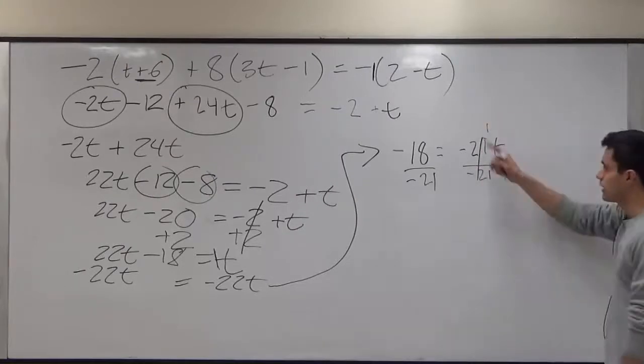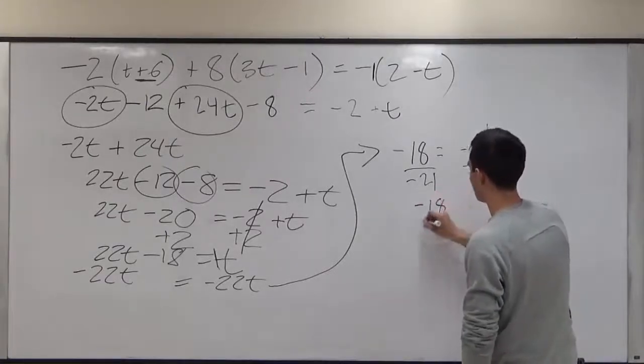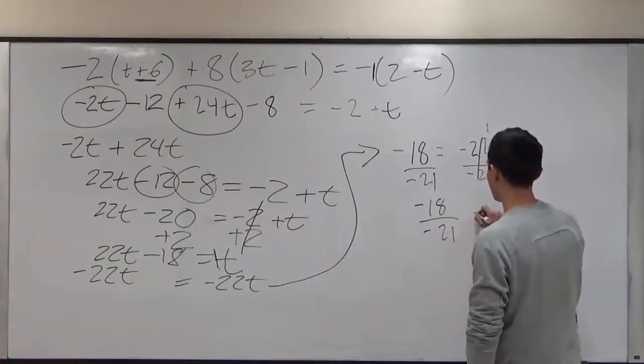So remember, this imaginary one could just stay here and that just becomes t. So then we would just have negative 18 over negative 21 is equal to t.